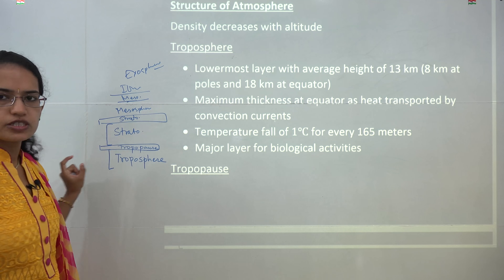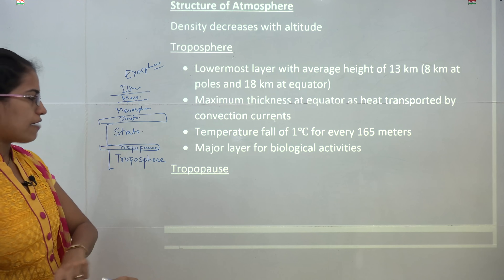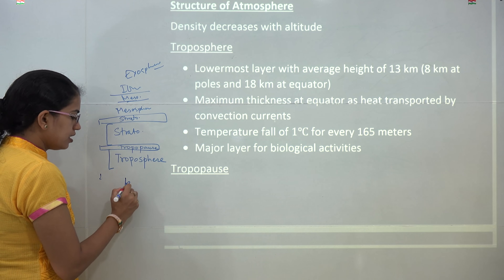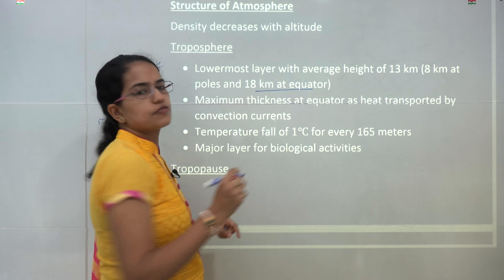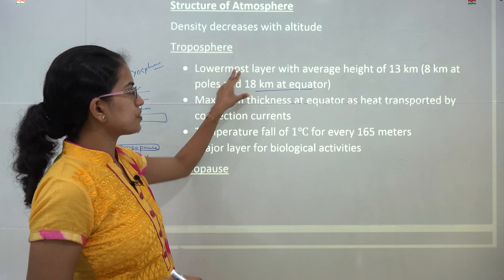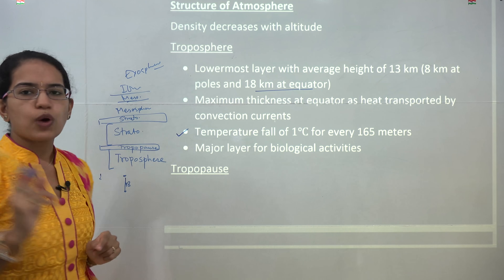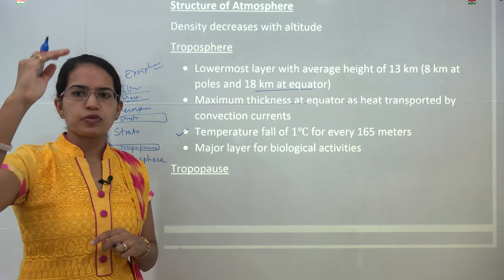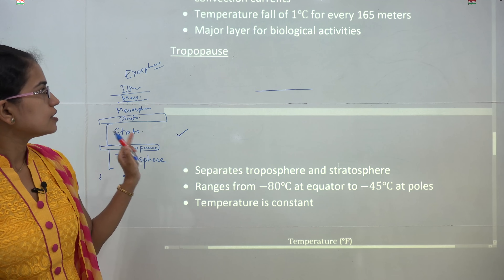Troposphere is the lowermost layer. Average height is 13 kilometers, varying from 8 kilometers in polar areas to 18 kilometers in equatorial areas. The maximum thickness of the troposphere is seen in the equatorial region. Most atmospheric processes take place in this layer, and the temperature drops by 1 degree Celsius for every 165 meters of ascent. Most biological activities also take place in the troposphere.